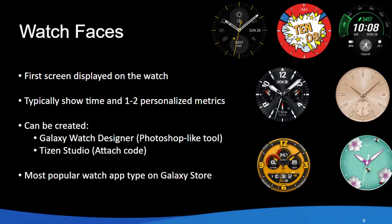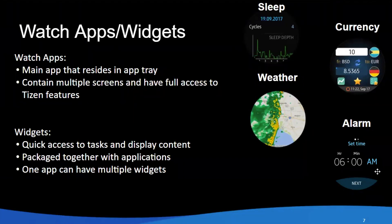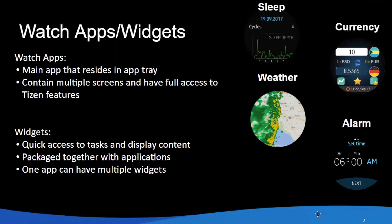An app is something that resides in the app tray. You can navigate away from the watch face and jump into that application — it could be almost anything: weather, health, or even games, which I want to dedicate a full series to someday. Widgets are small shortcuts or small applications that can live on the watch face or in other apps. You tap on them and they can take you to a full application — that's the main use most people give them.